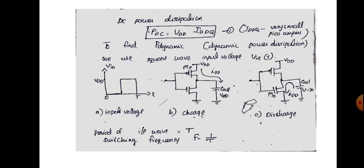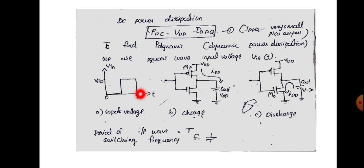To find P-dynamic, we use a square wave input voltage ranging from zero to VDD volts. The time period is T and the frequency is 1 by T, which is the switching frequency. When V is low, MP is on and MN is off; when V is high, MP is off and MN is on.